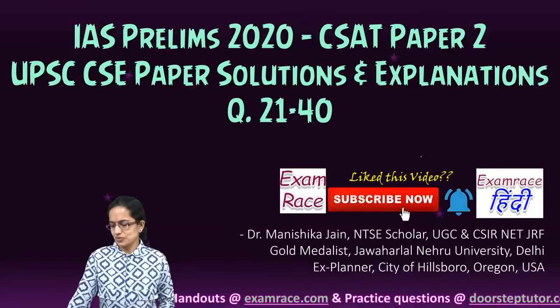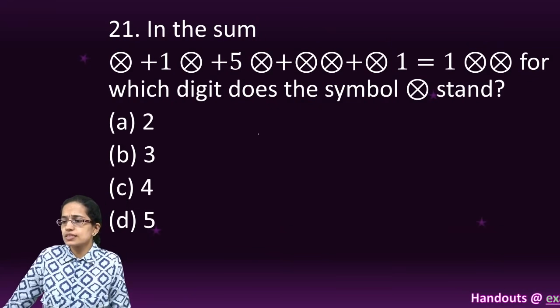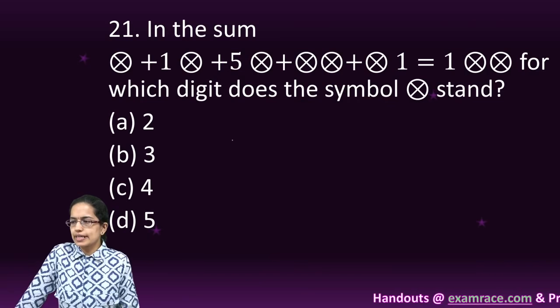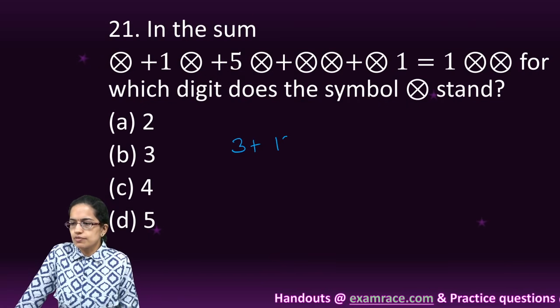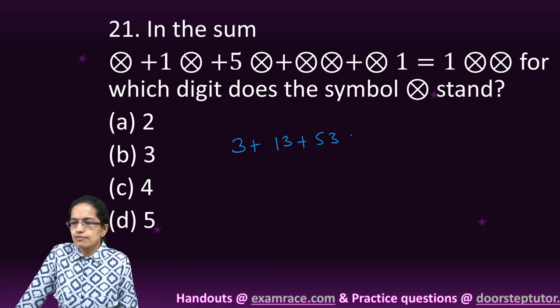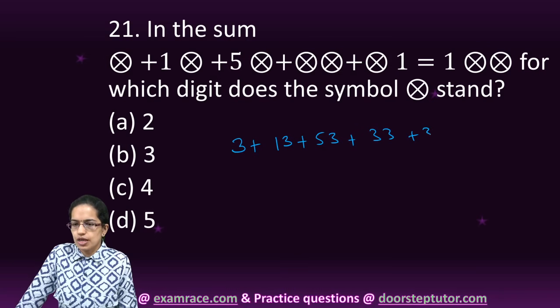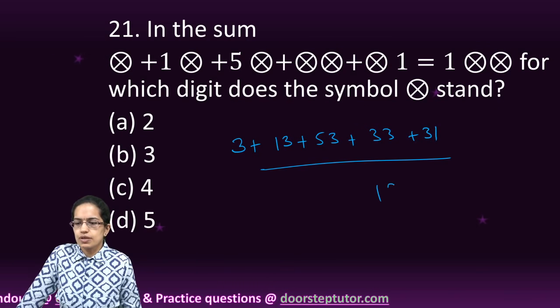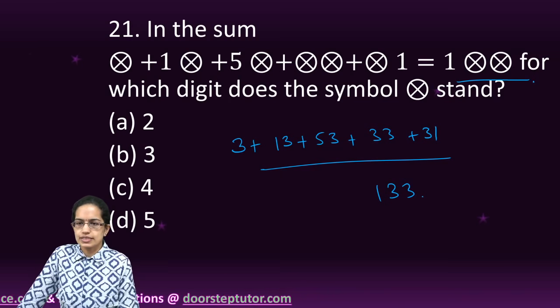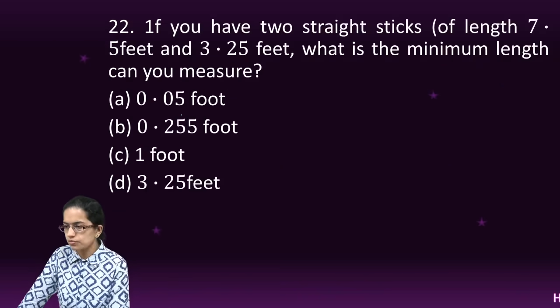Proceeding with the next set of CSET questions. The first question here is a simple question which we can solve by hit and trial. Let's substitute it with 3 and you would have the following numbers that would come up and the sum of these numbers would be 133 that matches here. So you would have 3 as the right option.